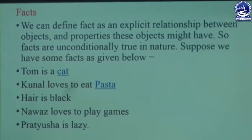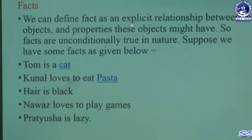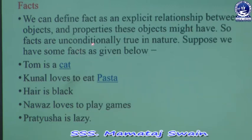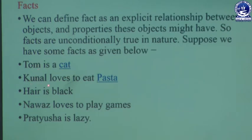Facts can be defined as an explicit relationship between objects and the properties those objects might have. Facts are unconditionally true in nature. Some examples of facts are: Tom is a cat, Kunal loves to eat pasta, hair is black, Nawaz loves to play games, and Prathiv is lazy. More precisely, a fact is a relationship between an object and its properties, and a fact is always true by nature.